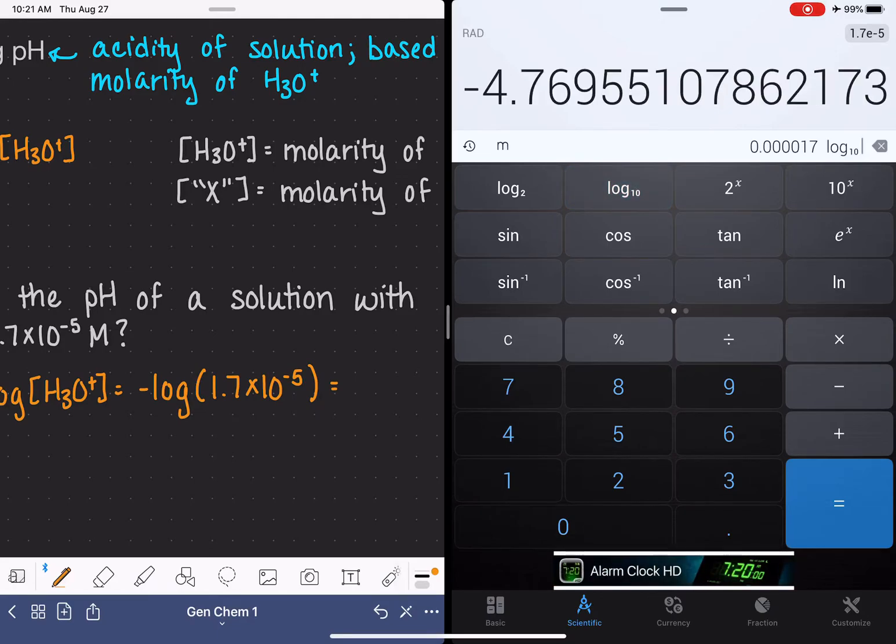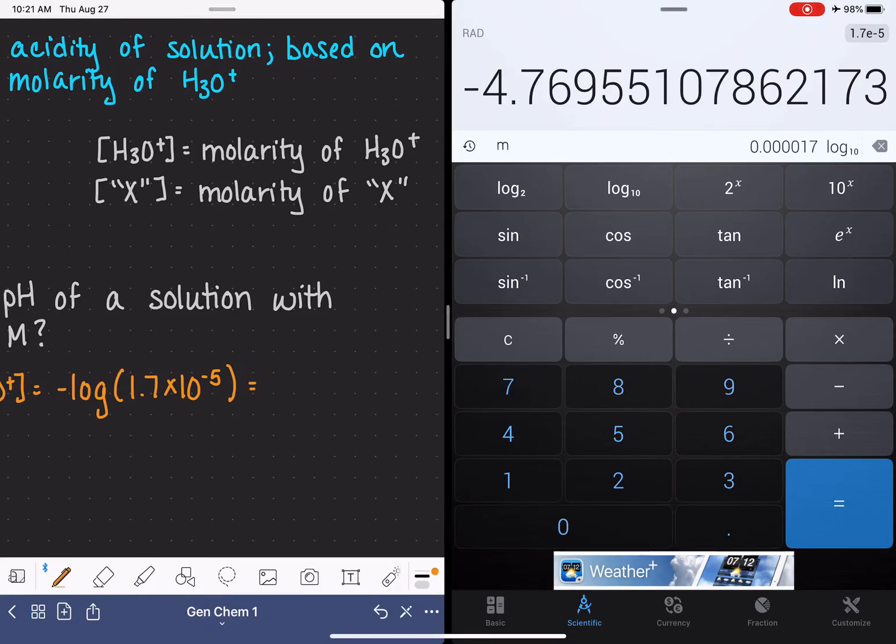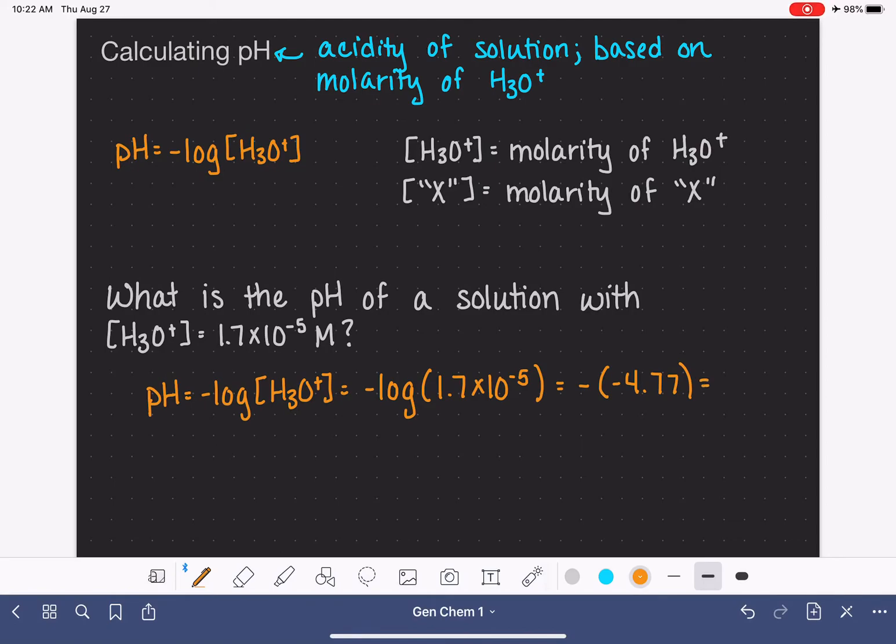And we can see that the result that I get for this is negative 4.76955. Don't forget that we have this negative sign out in front of our equation. So that's going to make that negative symbol go away. I'm going to put the negative sign in there initially, negative 4.77, and then I'll go ahead and get rid of those negative signs, 4.77.